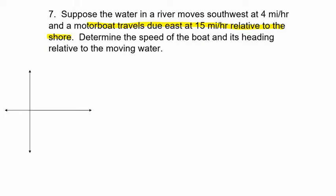So let's write that as a vector. I'm going to think of this as a north-south, east-west coordinate system with the origin here. If I'm moving due east at 15 miles per hour, east is the direction of my vector and 15 is the magnitude. So I'm going out 15 units along the x-axis, placing the vector in standard position. That is the actual path of my boat.